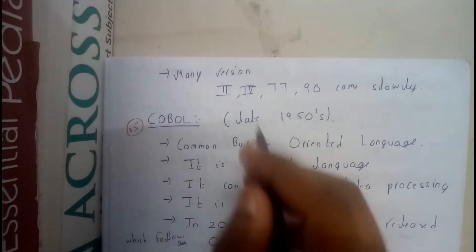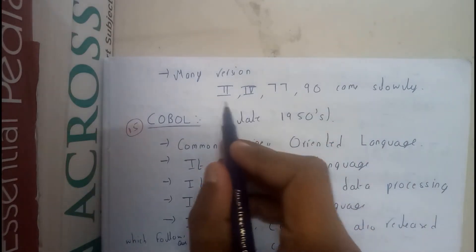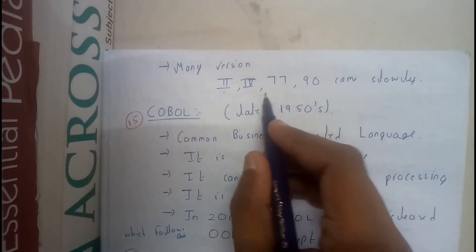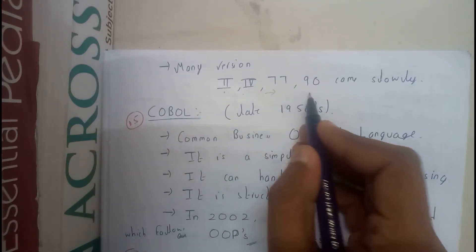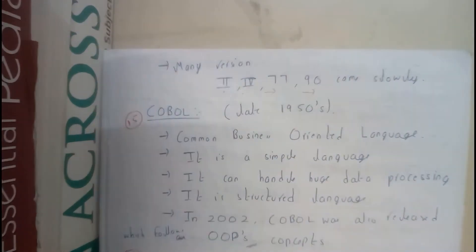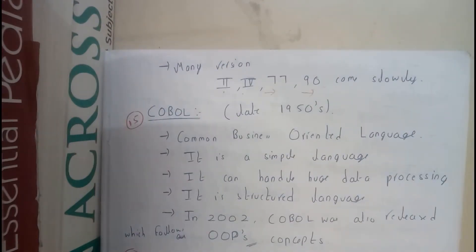Slowly there were many versions introduced, like Fortran 2, Fortran 4, Fortran 1977, and Fortran 90s — that is, the 1990s. So these versions slowly evolved over time.